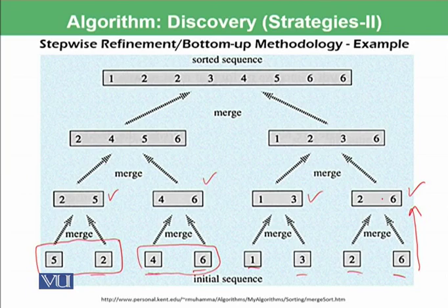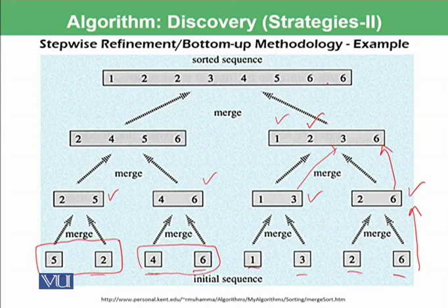Then you merge: 1, 2, 3, 6 — combining them in order: first 1, then 2, then 3, then 6. So you are going from the bottom up to the top by solving the problem at each level. This is one of the strategies of algorithm discovery.